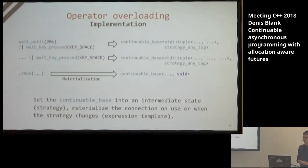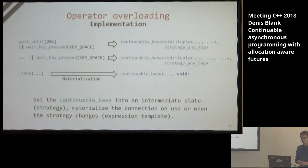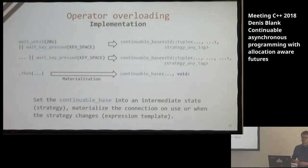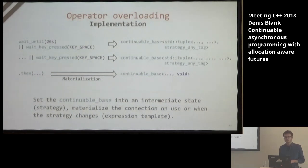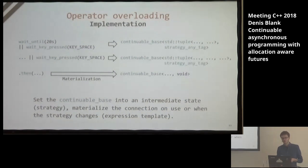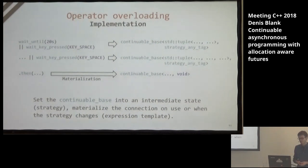For this, ContinuableBase is used. As mentioned, ContinuableBase has a strategy template argument that stores the current strategy being applied. When we call .then and see there was an ongoing strategy, we can apply the strategy afterwards. This principle is also known as an expression template, and it solves the problem quite nicely.